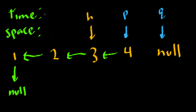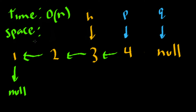So what are the time and space complexities of this algorithm? Well, what we're doing is we're having these pointers and we're iterating through the list one time. So we know that the time is going to be O(N). For the space complexity, we aren't using any additional space — we're just moving pointers around. So for that reason, the space is going to be constant.